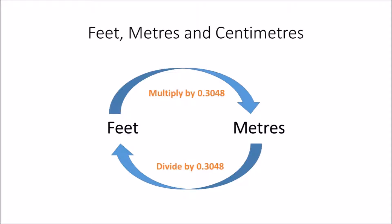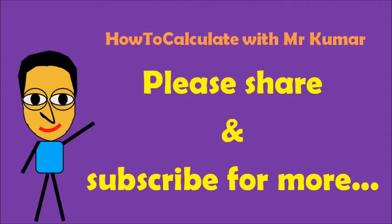To summarize: to convert from feet to meters, multiply by 0.3048; from meters to feet, divide by 0.3048. To convert from feet to centimeters, multiply by 30.48; from centimeters to feet, divide by 30.48. The key is to remember the conversion factors 0.3048 and 30.48.